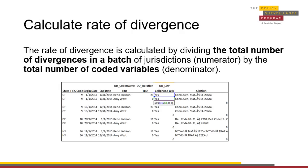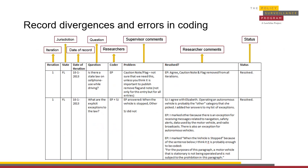To calculate the rate of divergence, the supervisor divides the total number of divergences in each batch of coding by the total number of coded variables. This can be done using formulas in Microsoft Excel. Once the divergence rates have been calculated, the supervisor should review the redundant coding using a coding review sheet, recording every divergence, error, and outstanding caution note.